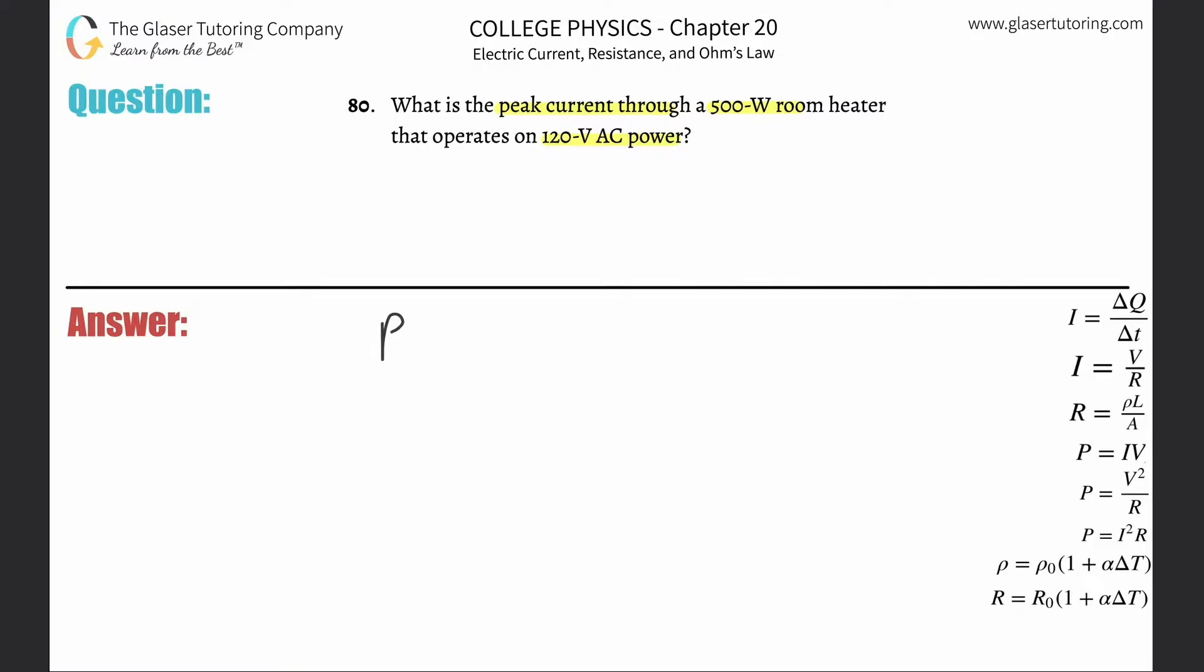We know this formula: the average power supplied or consumed by the object will be equal to one half multiplied by the peak current multiplied by the peak voltage.